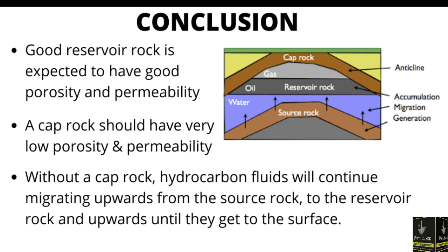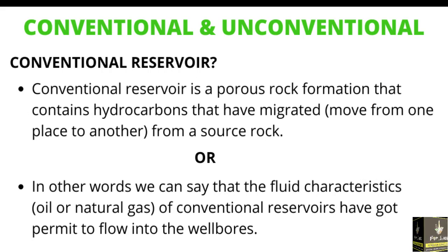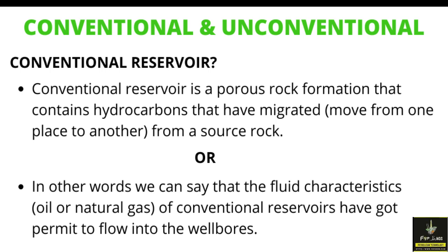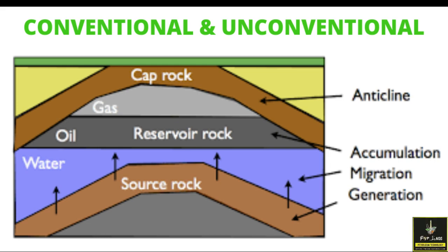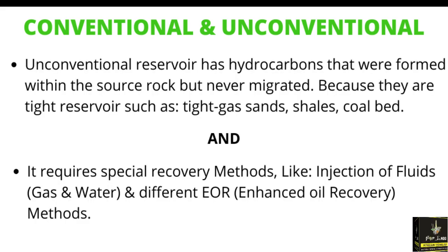In summary: the source rock generates the hydrocarbons, the reservoir rock accumulates the hydrocarbons, and the cap rock seals the hydrocarbons. A conventional reservoir is full of porous rocks with good permeability, so hydrocarbons can easily migrate from the reservoir towards the wellbore — they have the capacity to flow into the wellbore. As shown in this figure, hydrocarbons are generated in the source rocks, migrated towards the reservoir rocks, and the cap rock provides the seal.